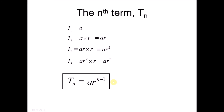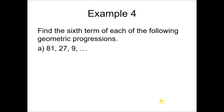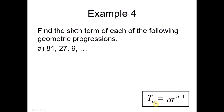We use this formula to find the nth term for any given geometric progression, provided we find a (the first term) and r (the common ratio). Example: find the sixth term, t6, of the GP 81, 27, 9... Here a = 81, and r = 27/81 = 9/27 = 1/3. So t6 = 81 × (1/3)^(6−1), which gives t6 = 1/3.